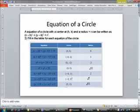Here if I have a center at negative 3, 0, the value for h is negative 3. The value for k is 0, and my radius is square root of 3.